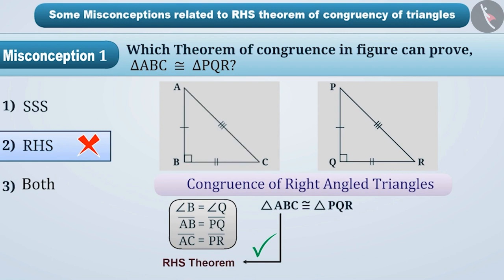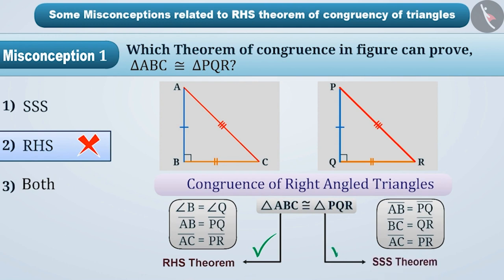Because here, all three sides of triangle ABC are equal to the three corresponding sides of triangle PQR. Here, we can also use the SSS Theorem.